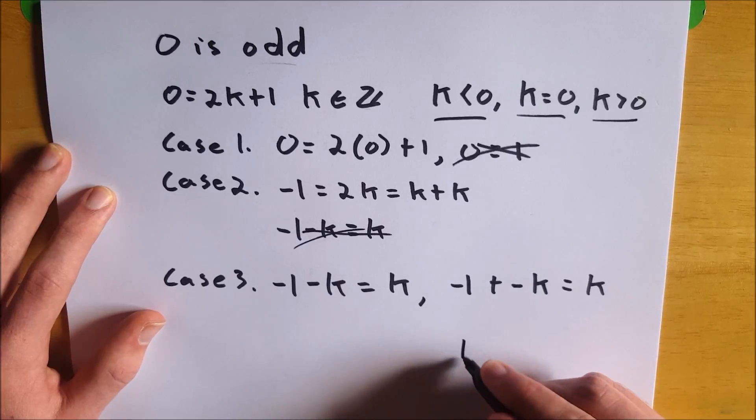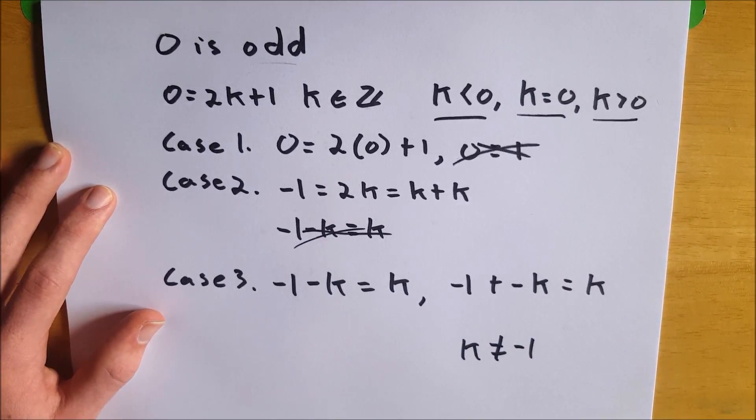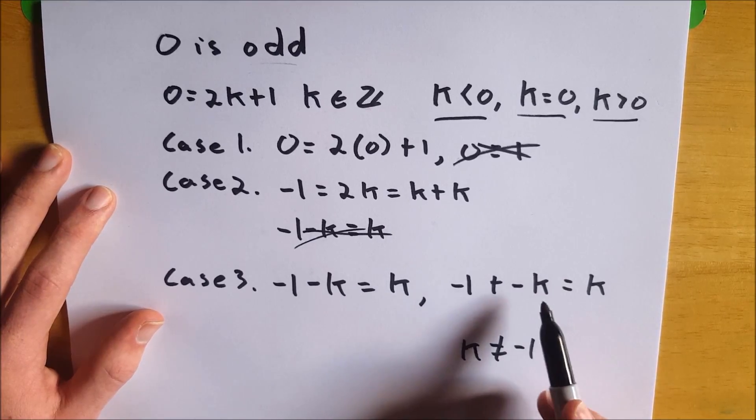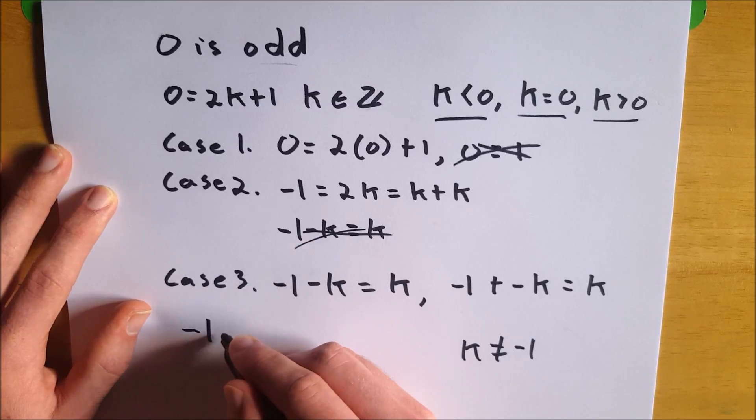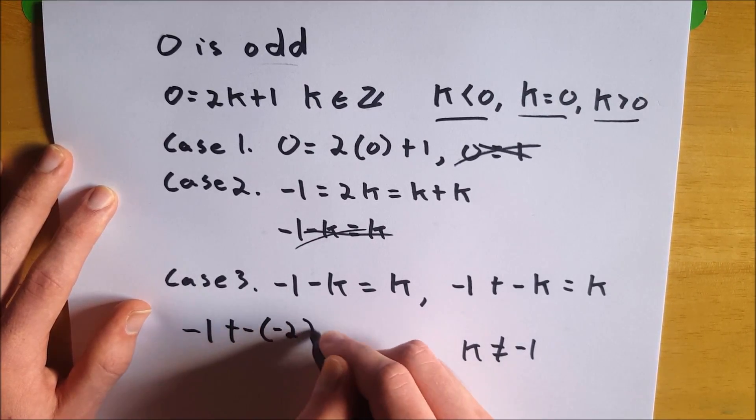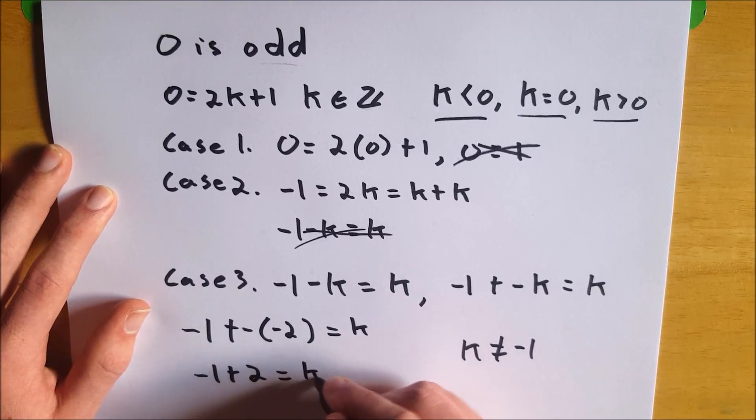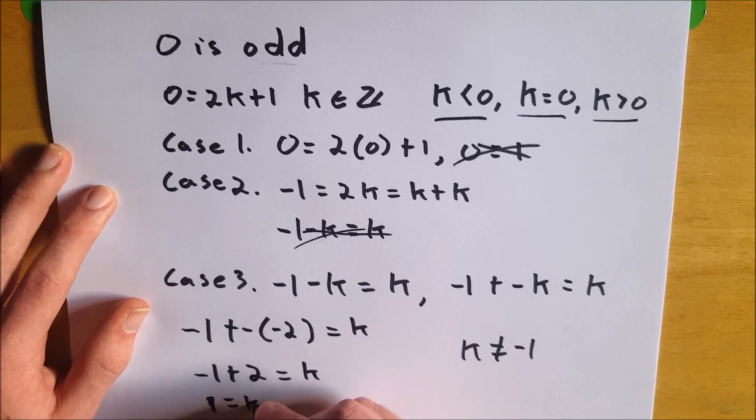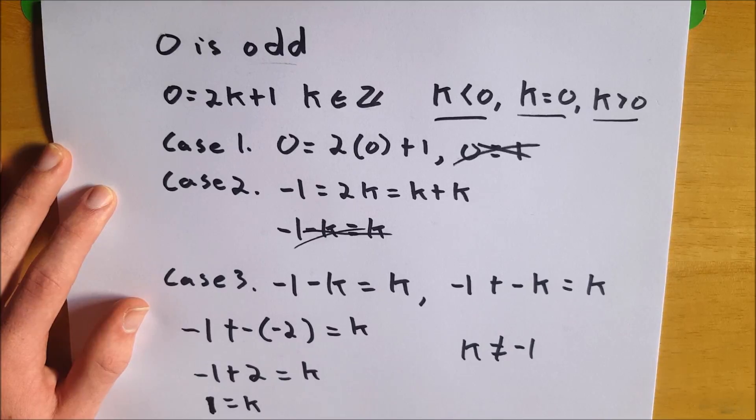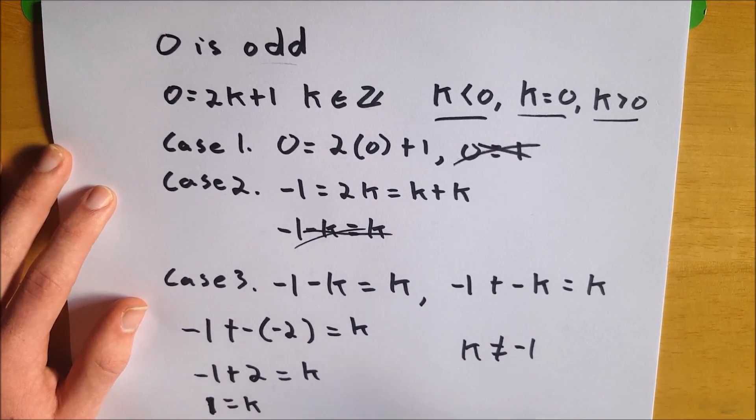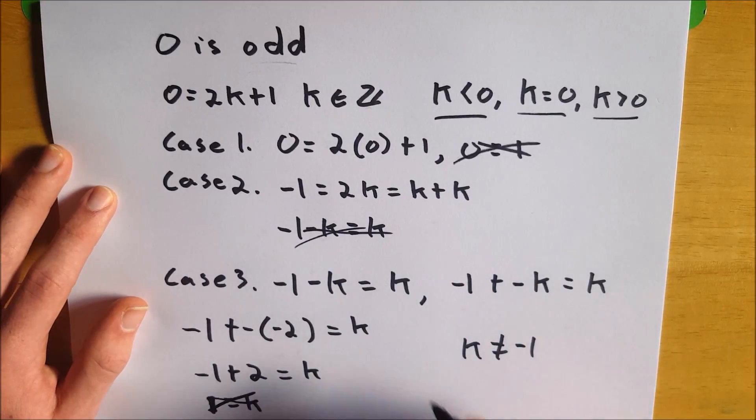So that means since k does not equal negative one, and k is a negative integer, then it has to be either negative two or less. So it's got to be an integer with an absolute value greater than one. So if we look at negative two, and we plug negative two in here, that gives us negative one plus the opposite of negative two equals k, which would mean that negative one plus two equals k, which would mean that one equals k. And that is a contradiction because we defined k as being negative. And any negative integer with an absolute value greater than one is going to lead to a positive number here being equivalent to a negative integer. So we cannot have that. That's a contradiction.